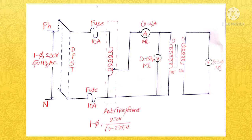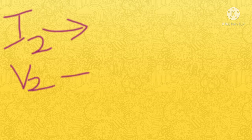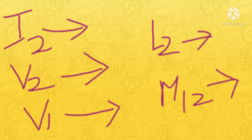The voltage at the 115V side is V2, the voltage at the 230V side is V1, and the current flowing through the 115V side is considered as I2. After finding these three values for different autotransformer settings, we will get different voltages and currents. We will tabulate the readings — the current I2, the voltage V2 across the 115V side, and the voltage V1 across the 230V side. From these, we can find L2 and M12.